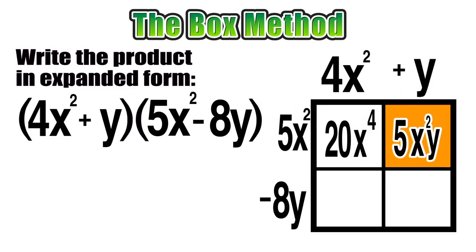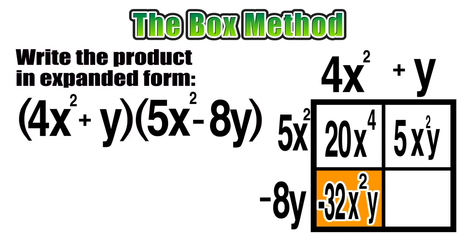For the bottom left section of our box, we need the product of negative 8y and 4x squared, which is negative 32x squared y. Finally, for our bottom right section, the product of negative 8y and y, which is negative 8y squared.